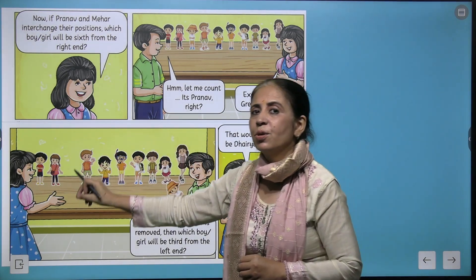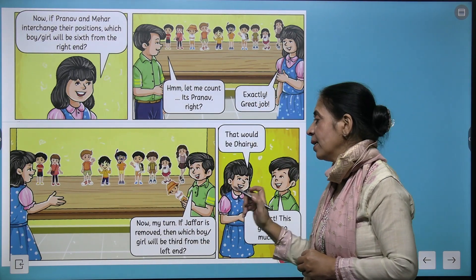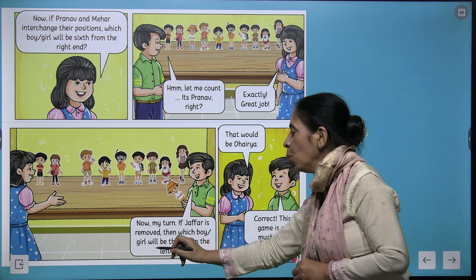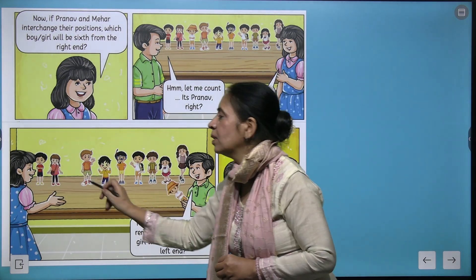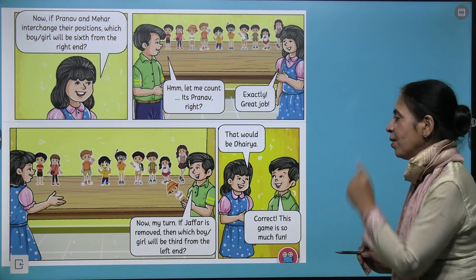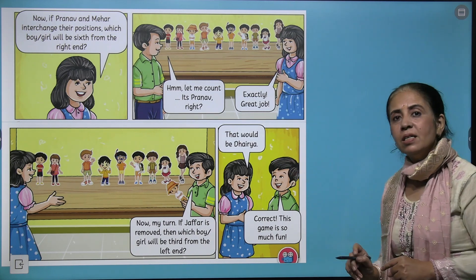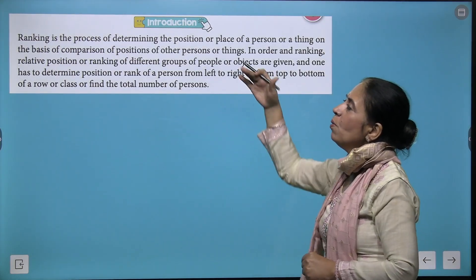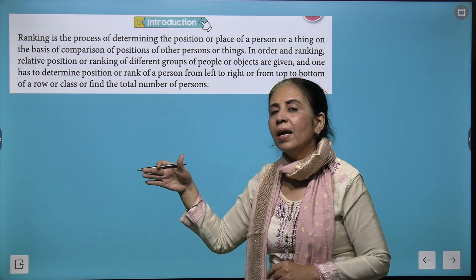Now it was Arnav's turn to ask Ria. He asked that if he removed Jaffer, who is going to be on the third side from the left, and Ria gives the right answer.